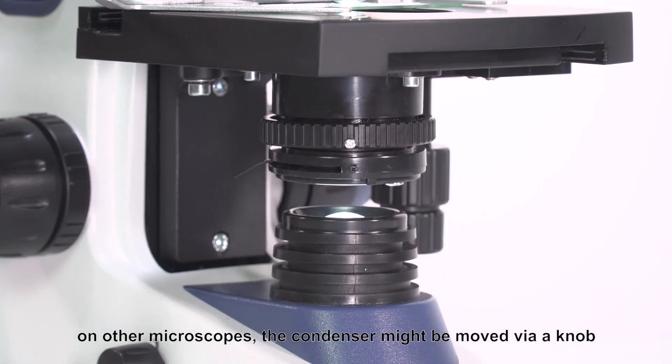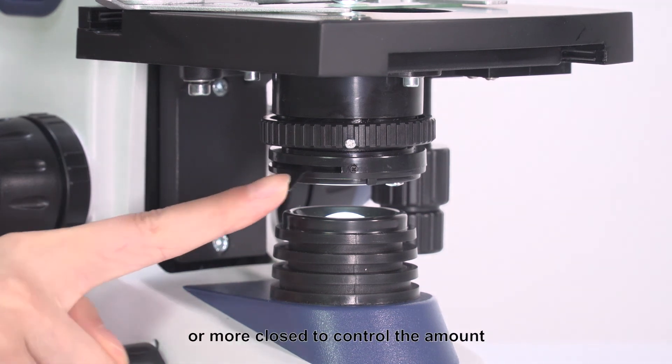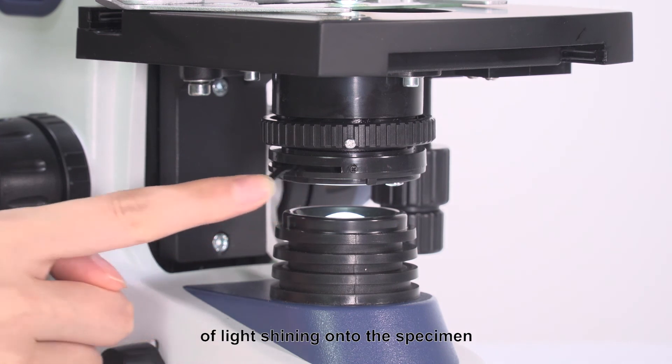On other microscopes, the condenser might be moved via a knob. The iris diaphragm can be slid either more open or more closed to control the amount of light shining onto the specimen.